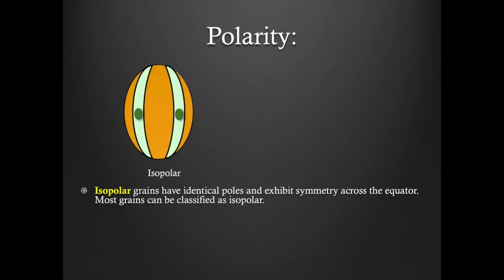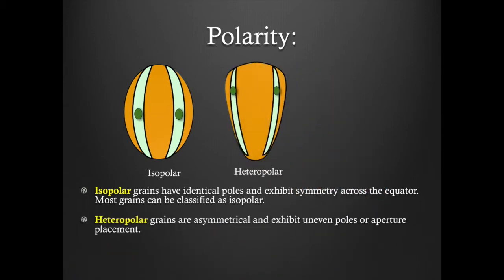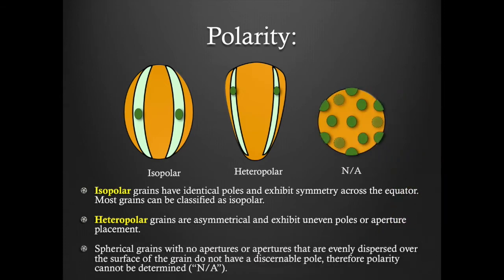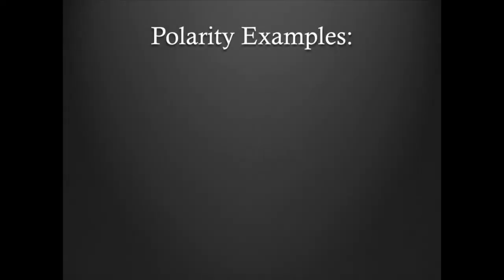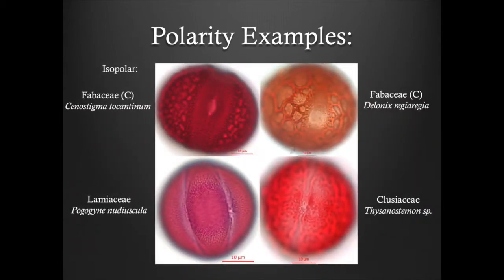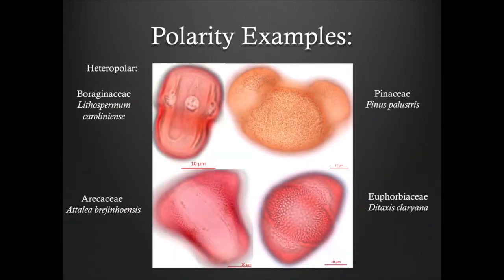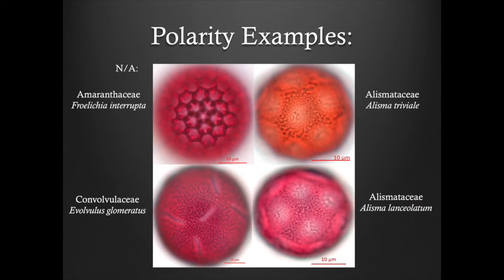Here you can see an example of a colporate polar view. Polarity: isopolar grains have identical poles and exhibit symmetry across the equator; most grains can be classified as isopolar. Heteropolar grains are asymmetrical and exhibit uneven poles or uneven aperture placement. Spherical grains with no apertures, or apertures that are evenly dispersed over the surface of the grain, do not have a discernible pole; therefore polarity cannot be determined. Here are a few examples of isopolar grains, a few examples of heteropolar grains, and some examples of grains where the polarity cannot be determined.